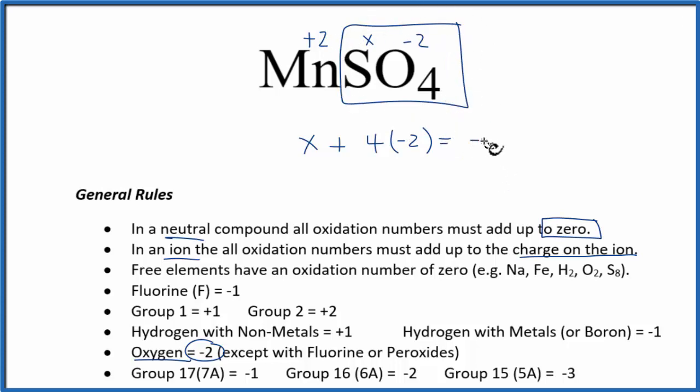So now we just figure out X. X plus minus 8 equals minus 2. So let's add 8 to both sides to get X by itself. 8 plus minus 2, that's a plus 6. And that is the oxidation number on the sulfur here. Plus 6.